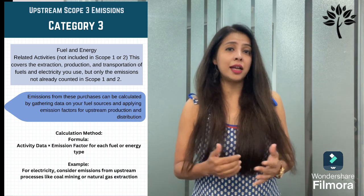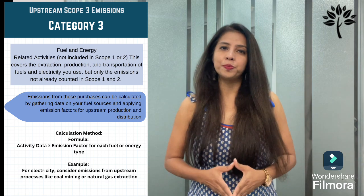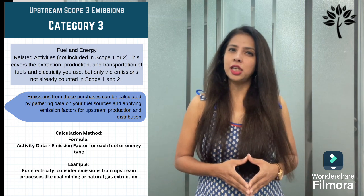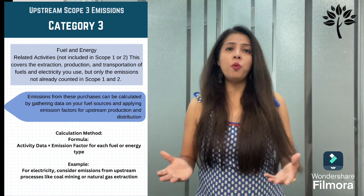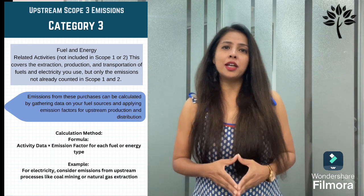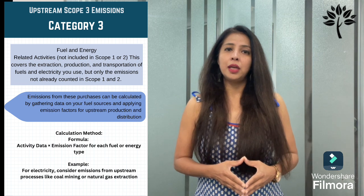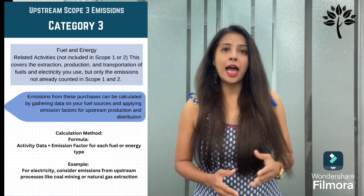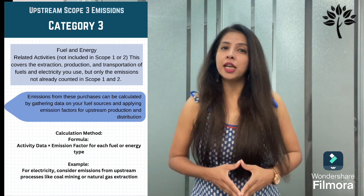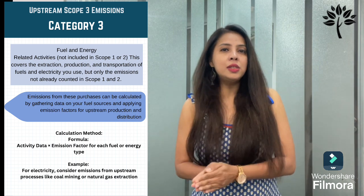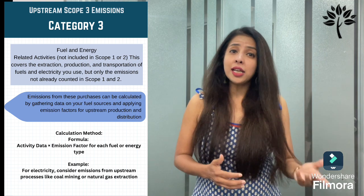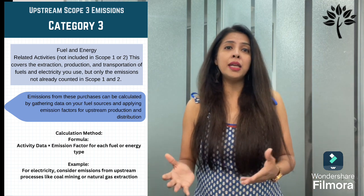Category 3 covers fuel and energy related activities not included in scope 1 or scope 2. It covers the extraction, production, and transportation of fuels and electricity you use — but only the emissions not already counted in scope 1 and 2. Calculate these by gathering data on your fuel sources and applying emission factors for upstream production and distribution. The calculation is: activity data × emission factor for each fuel or energy type. For electricity, consider upstream emissions like coal mining or natural gas extraction.